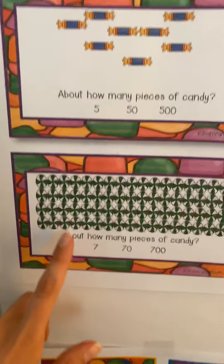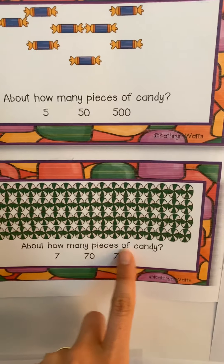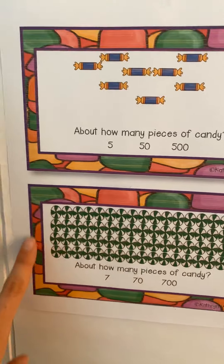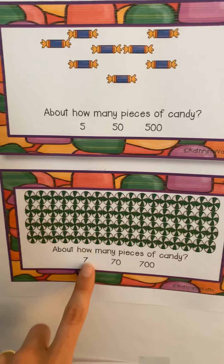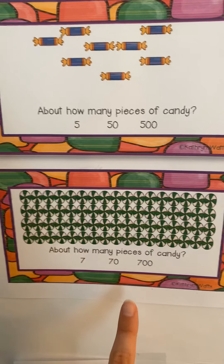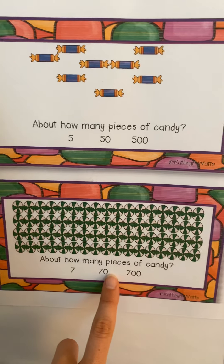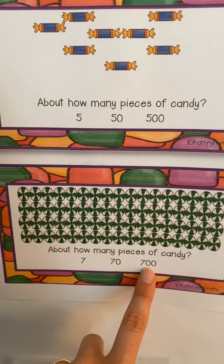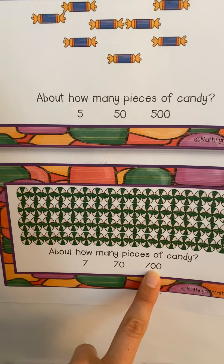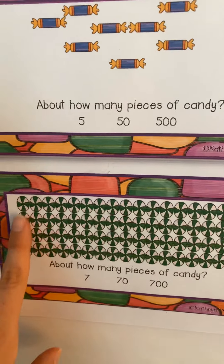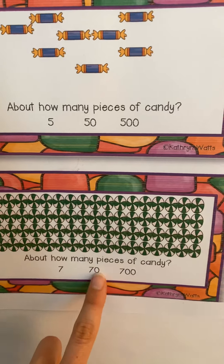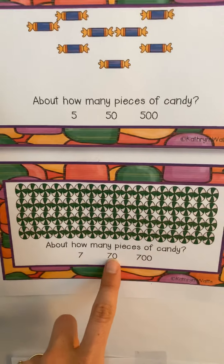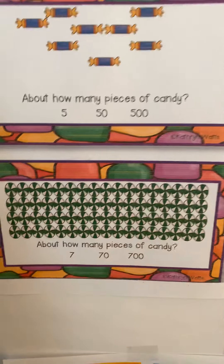Let's look below. About how many pieces of candy? Seven, seventy, or seven hundred? This does look like a lot, so I know it's more than seven. I know seven hundred is close to one thousand, and this looks like a lot but not that much. So what would be the answer? Seventy. Seventy is the reasonable guess for those.